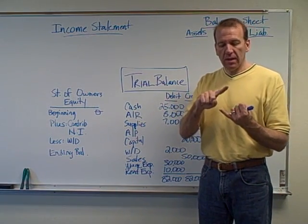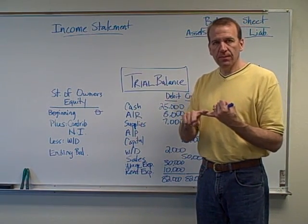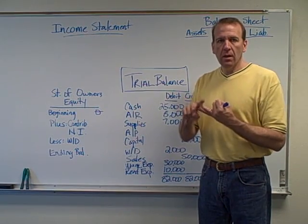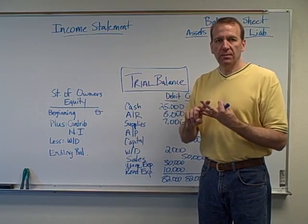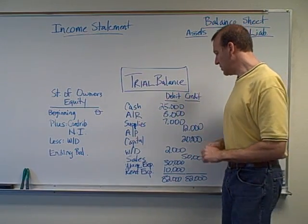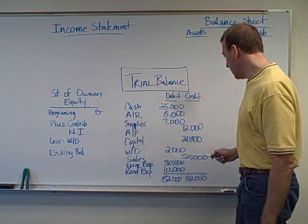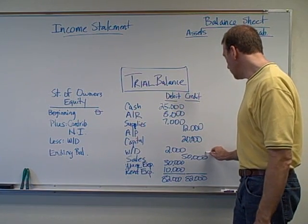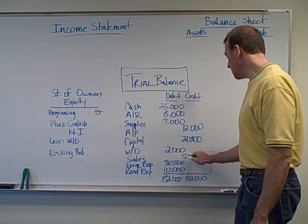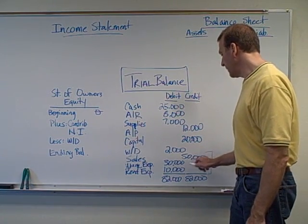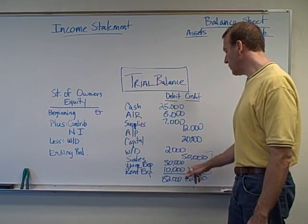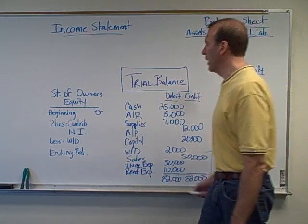We're going to prepare the income statement, the statement of owner's equity, and the balance sheet. The income statement is made up of these accounts right here — our revenue, which is sales, and we only have two expenses: wage expense and rent expense.